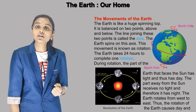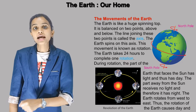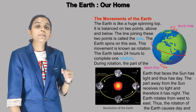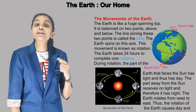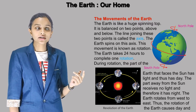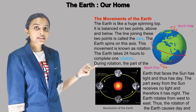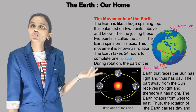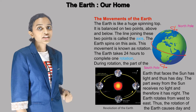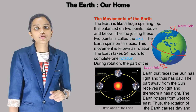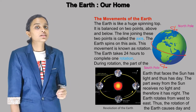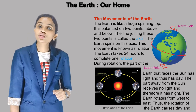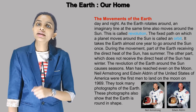The earth takes 24 hours to complete one rotation. During rotation, the part of the earth that faces the sun has light and thus has day. The part away from the sun receives no light and therefore it has night. The earth rotates from west to east. Thus, the rotation of the earth causes day and night.